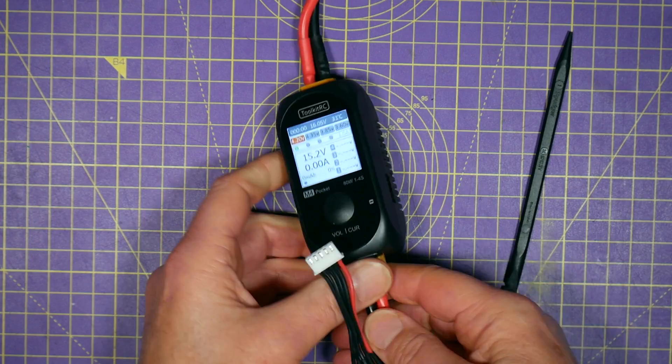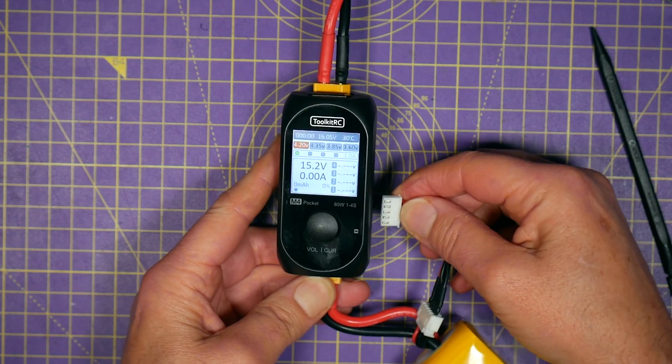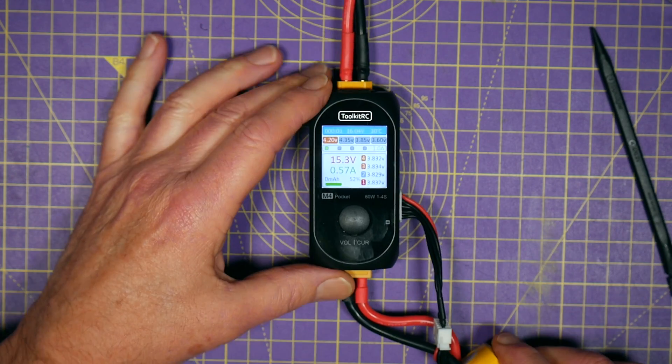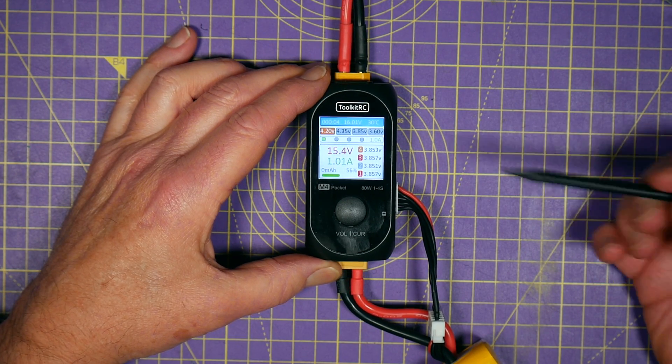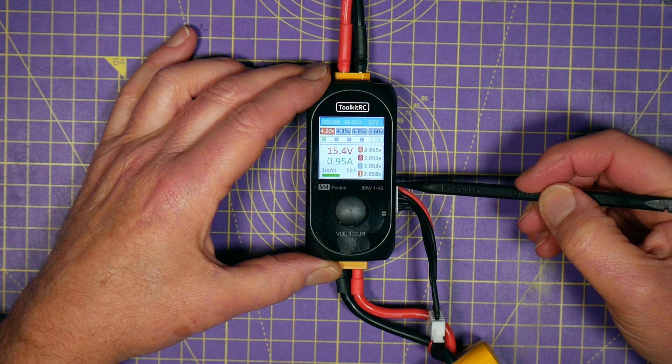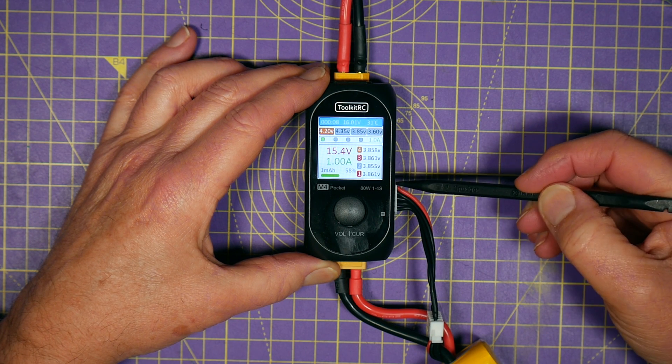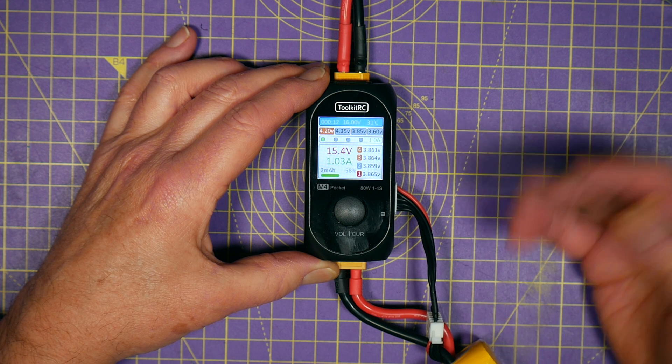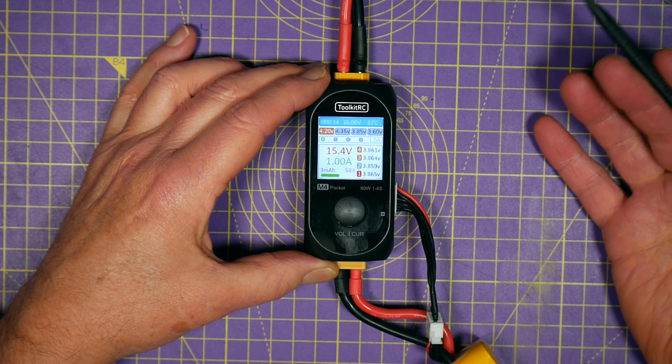So let's plug that in there. This goes in the side. And it's beeped. That's just told me it started charging. And it does that because it's detected there's a match between the voltages on the balance lead here and on the main port. And there's nothing else to do until it's finished.